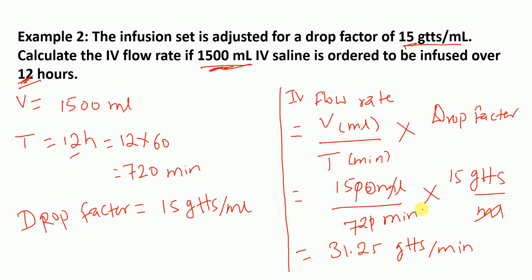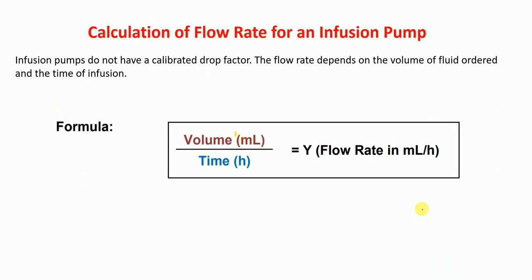Now I'm going to talk about the calculation of flow rate for an infusion pump. The important thing to consider is that infusion pumps do not have a calibrated drop factor. The flow rate depends on the volume of fluid ordered and the time of infusion. The formula is simple: volume in ml divided by time in hours gives flow rate in ml per hour.